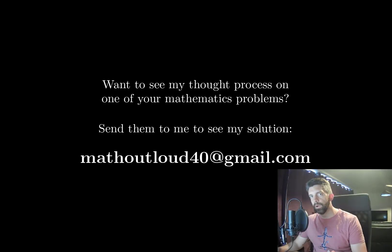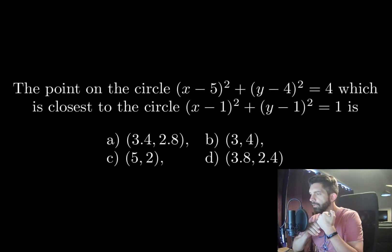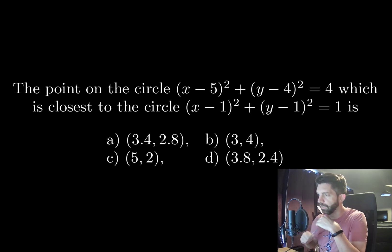Hello everyone, let's take a look at our next problem. The point on the circle (x - 5)² + (y - 4)² = 4, which is closest to the circle (x - 1)² + (y - 1)² = 1, is one of the following four options.